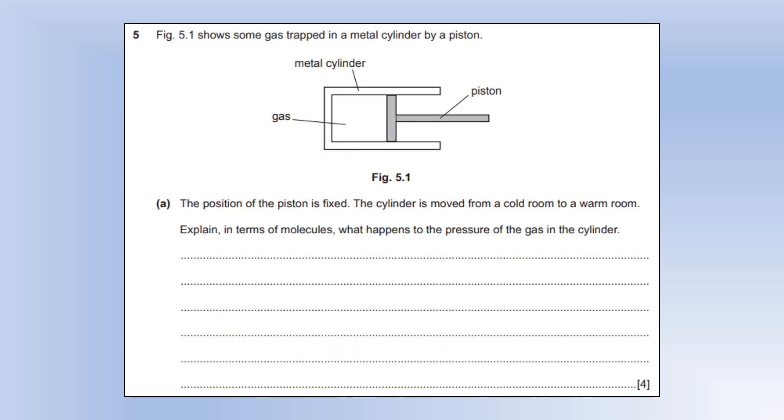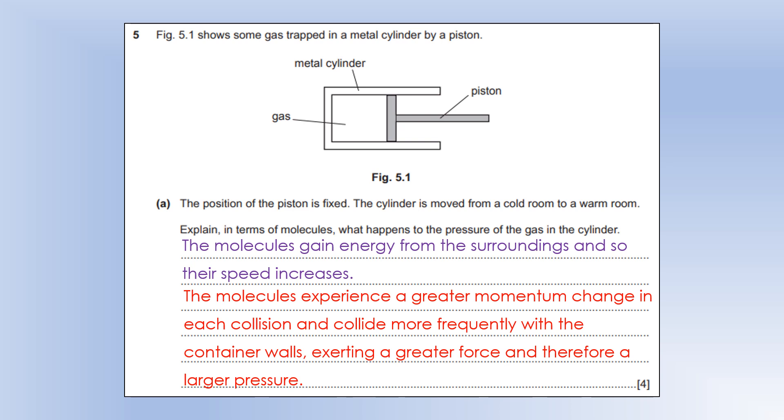The diagram shows some gas trapped in a metal cylinder by a piston. The position of the piston is fixed. The cylinder is moved from a cold room to a warm room. Explain in terms of molecules what is happening to the pressure of the gas. If you move into a warmer room, the molecules are going to gain energy from the surroundings and so their speed is going to increase because they've effectively gained kinetic energy. So during every collision, the molecules experience a greater momentum change and they also collide more frequently with the container. Both of which mean we're going to get a larger force on the container and therefore a larger pressure.